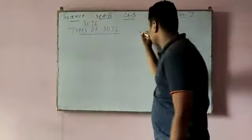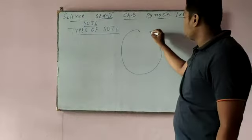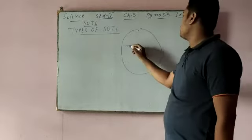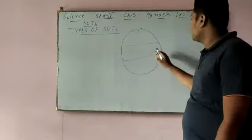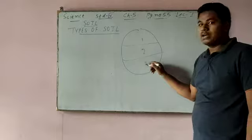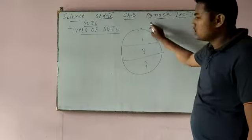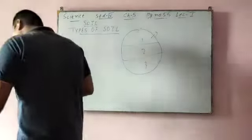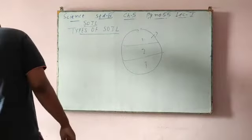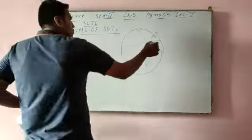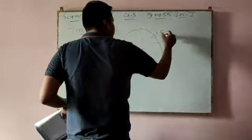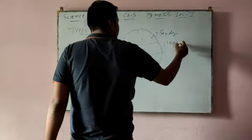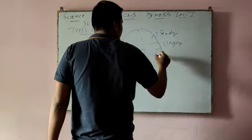If this is a soil particle and it is divided into three parts — first part, second part, third part — then in these three proportions, one proportion will be sandy soil, the second one will be clay soil, and the third will be loamy soil.